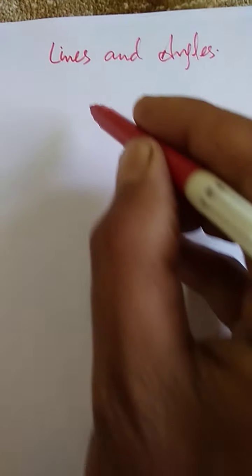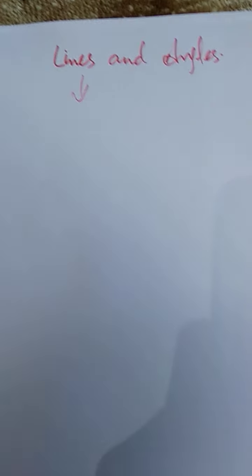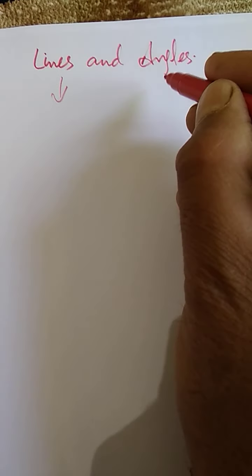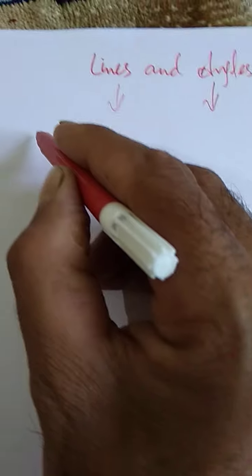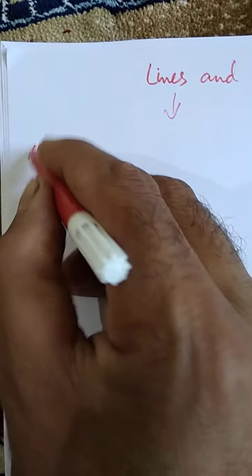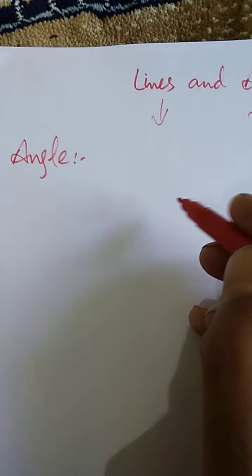Assalamu alaikum my dear students. As you know, we are studying the topic lines and angles. In this topic we have discussed all about a line and a pair of lines. Now today we are supposed to discuss an angle. Let us write the definition of an angle first — what is an angle?